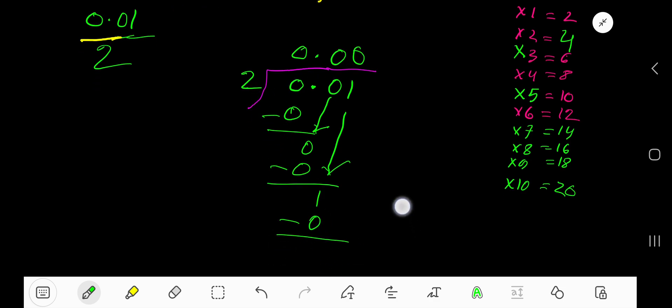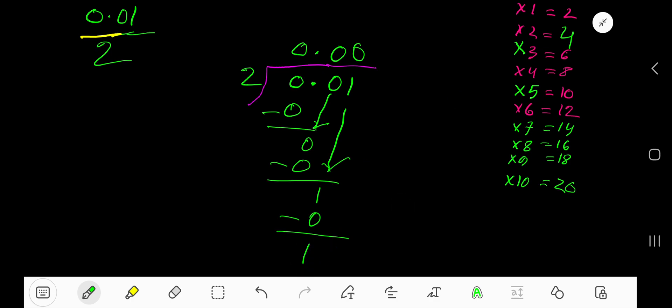If you subtract, you are getting 1. To continue this process, look, this is a decimal number, so you can add any number of trailing zeros. Bring down this 0. Now you are getting 10.